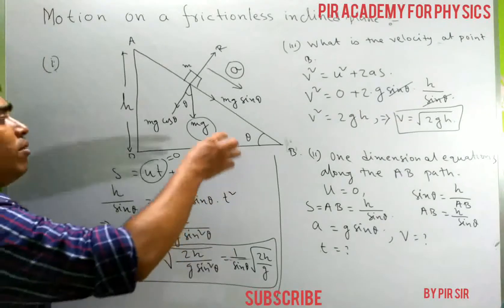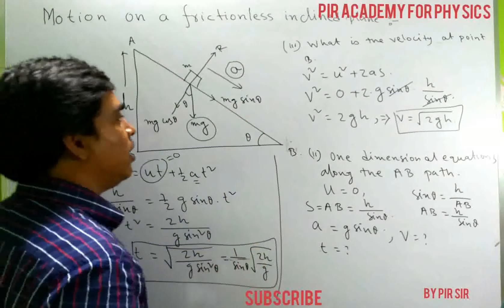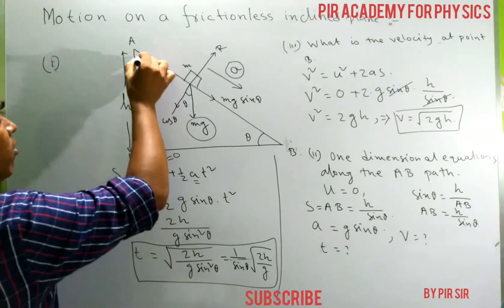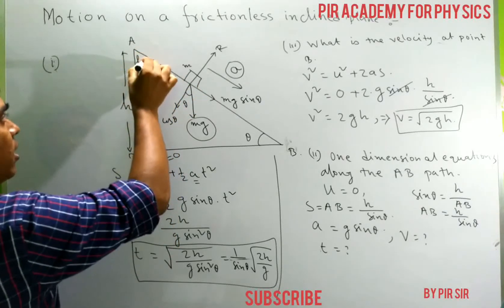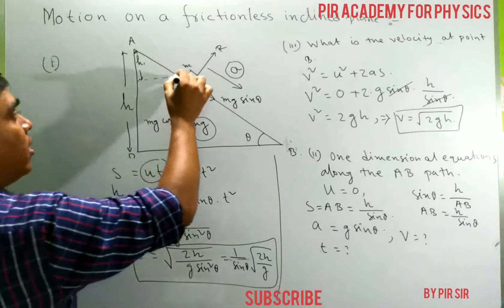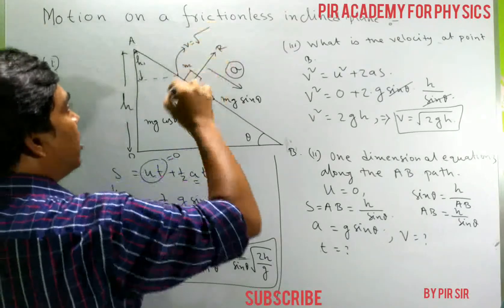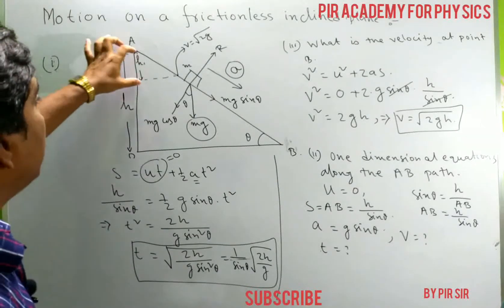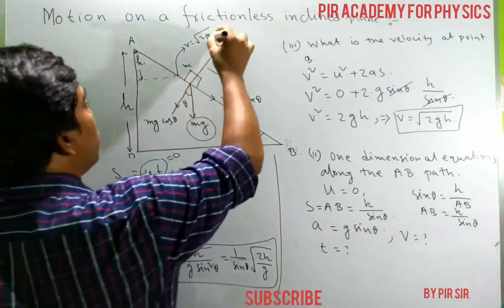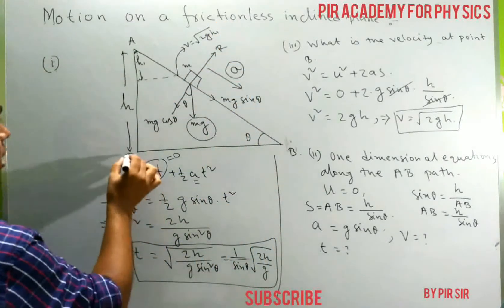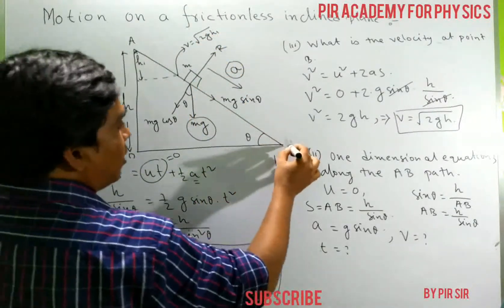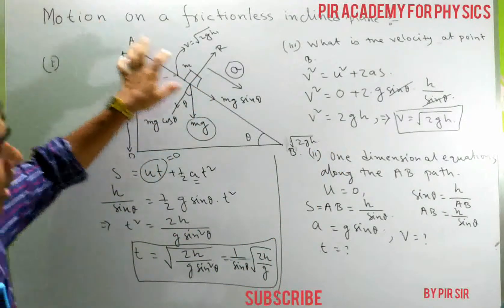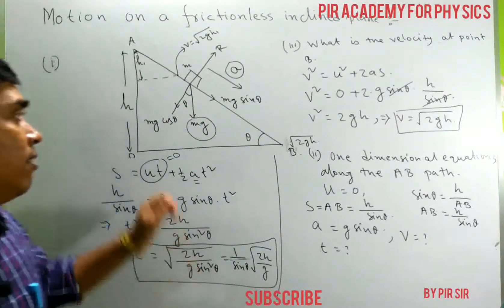Fourth question: the velocity at any point on the inclined plane. If a point has height H1, then the velocity at that point V equals the square root of 2g times H1. At point B where H1 equals H, the velocity is the square root of 2gH. You can calculate the velocity at any point using this method.